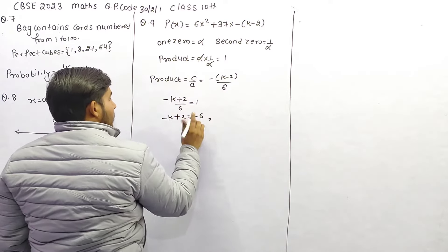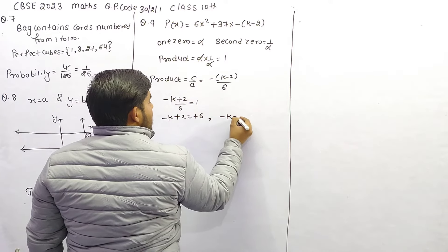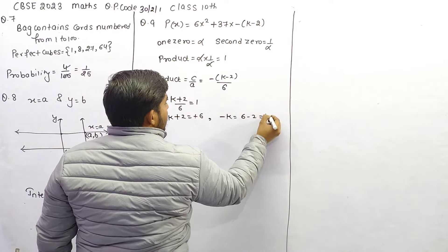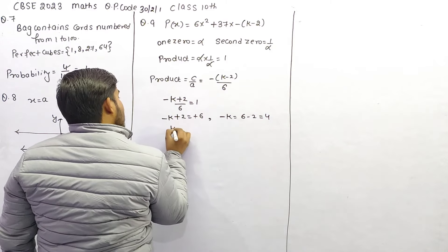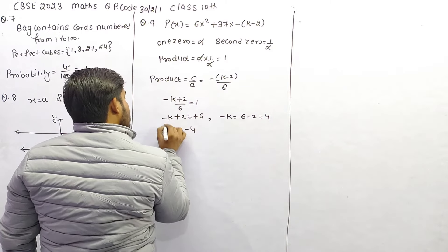इधर ले जाएंगे, minus K is equal to 6 minus 2, 4, minus को इधर ले जाओ, K की value minus 4,